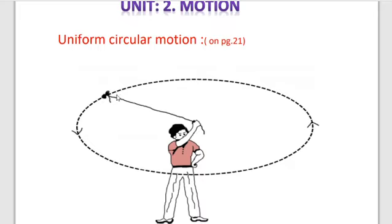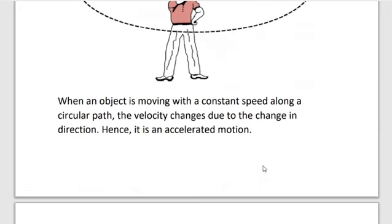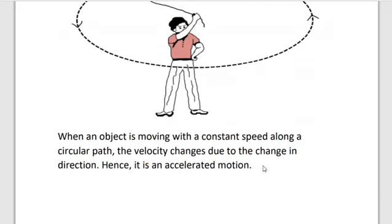Suppose we release at this point — it moves in the tangent to the circular path. This is because once the stone is released, it continues to move along the direction it has been moving at that instant. This shows that the direction of motion changes at every point. The direction of motion changes at every point when the stone was moving along the circular path. When an object is moving with constant speed along a circular path, the velocity changes due to change in direction. Hence, it is accelerated motion.